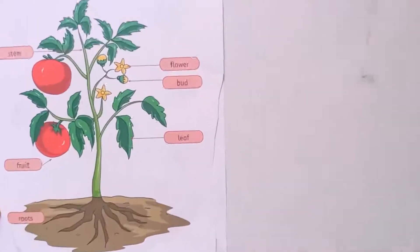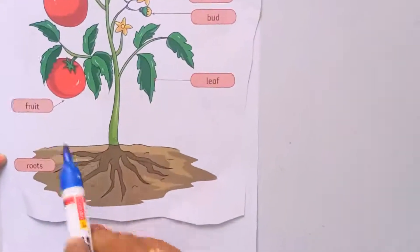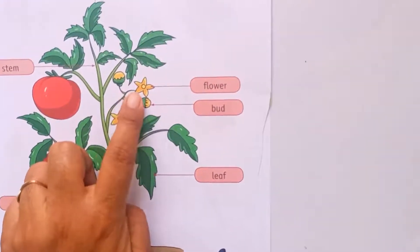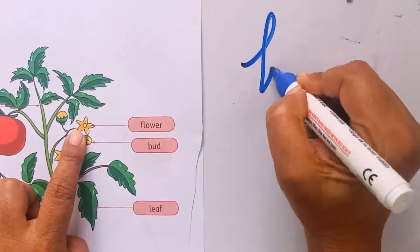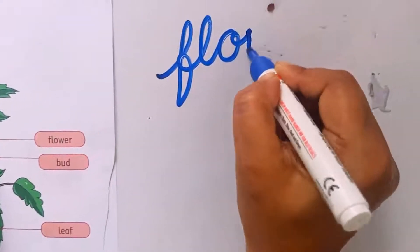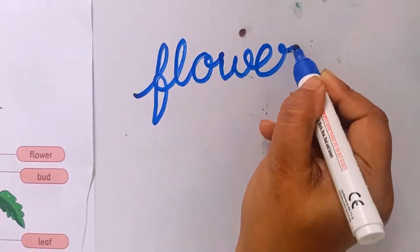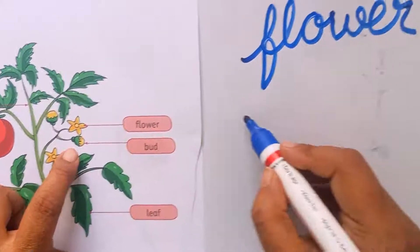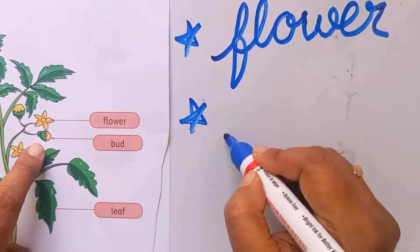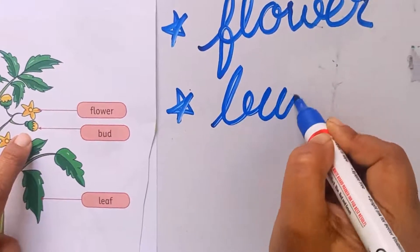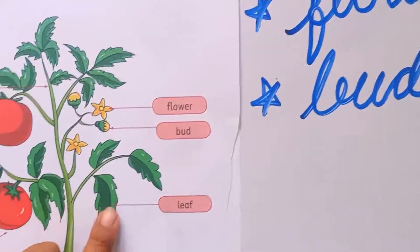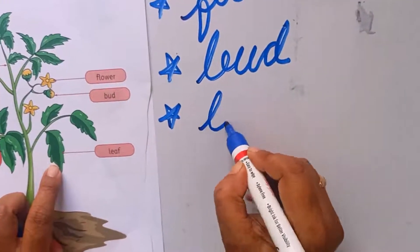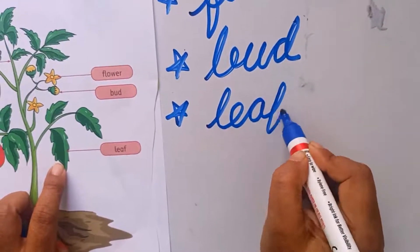Let's revise once again. We are learning the parts of a plant. Which part is this? This is flower — F-L-O-W-E-R. Now, this is called bud — the spelling of bud is B-U-D. Next one, this is leaf — L-E-A-F.